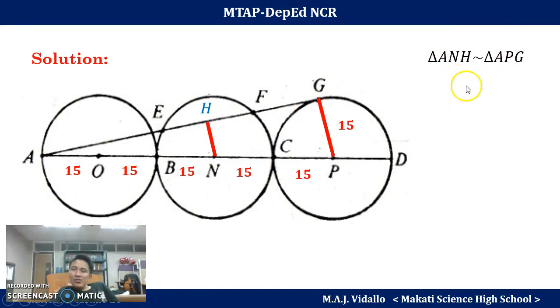Since the two triangles are similar, we can say that the length of this base HN over the hypotenuse AN is actually equal to the base GP or PG over the hypotenuse AP. Since we don't know the length of HN, we leave it as this. How about AN? Perhaps your answer is 45. And GP is 15, AP is 75.